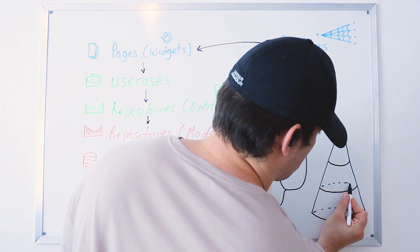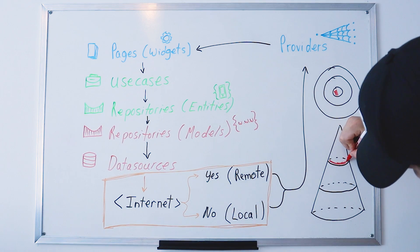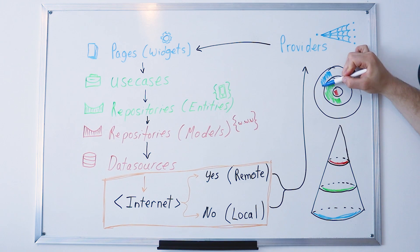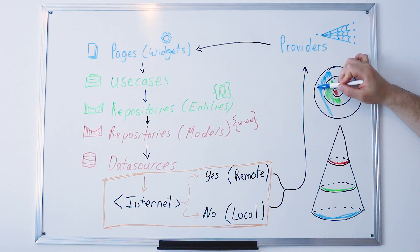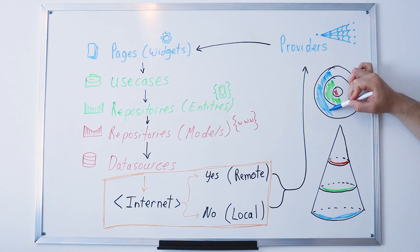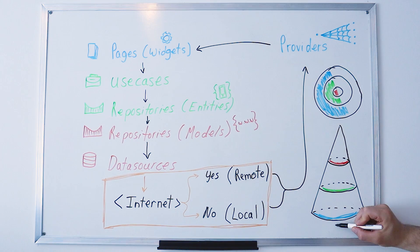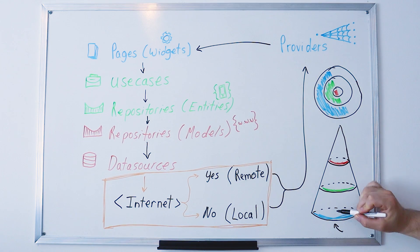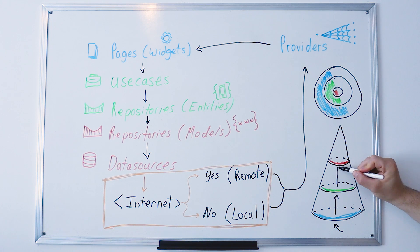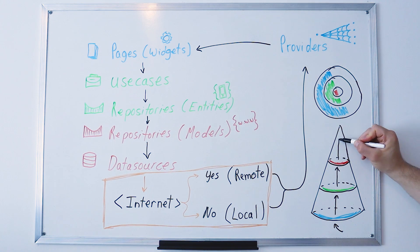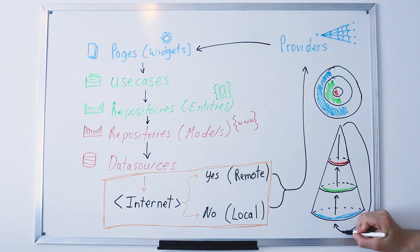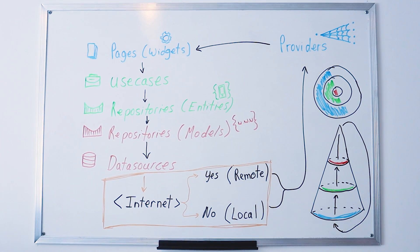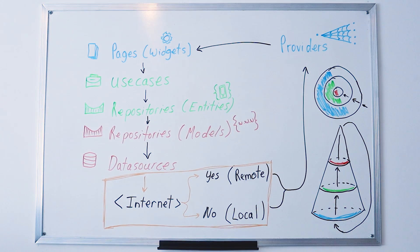You can represent clean architecture as a cone or as a circle. Personally, I prefer the cone because it makes it simpler to understand the data flow: it starts from a user interaction, goes into the business layer, then the data layer, and returns back to the presentation layer. This is why in most diagrams of clean architecture, arrows point towards the center — that is the flow of how everything works.